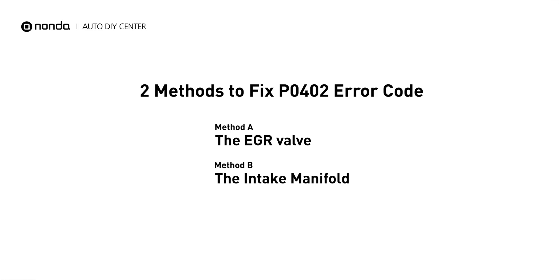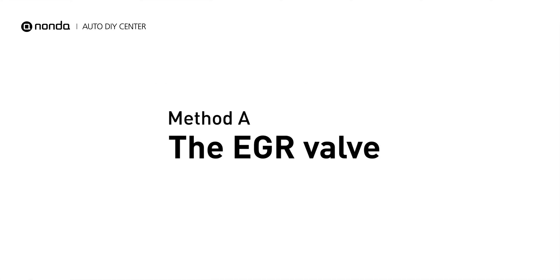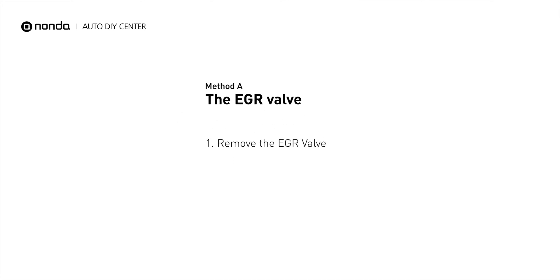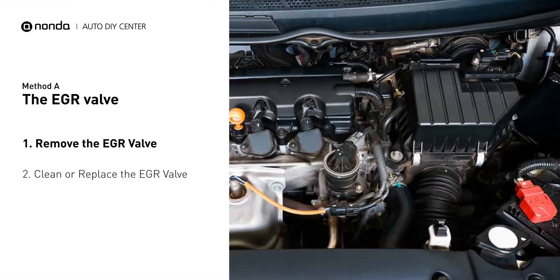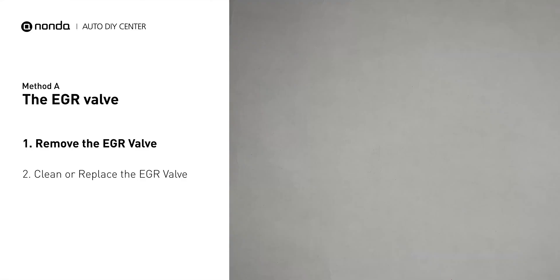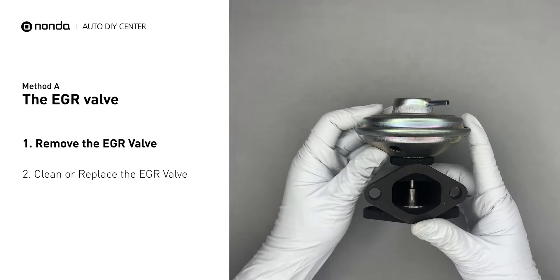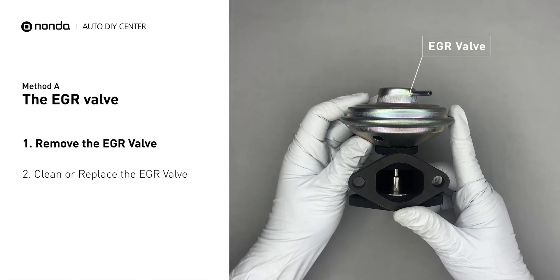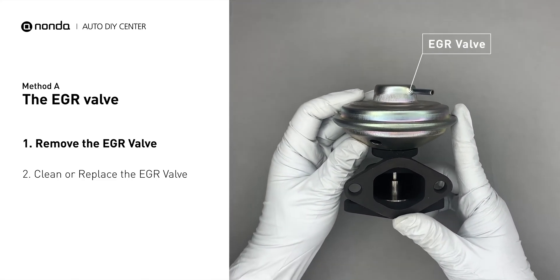Here are two simple DIY methods you can try to solve this problem. Method A: the EGR valve. Looking at the engine from the front, the EGR valve is located towards the rear of the engine just to the right side of the center. First, carefully remove the EGR valve from your car.